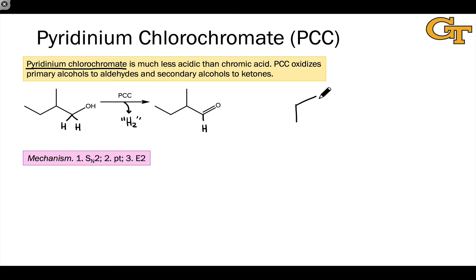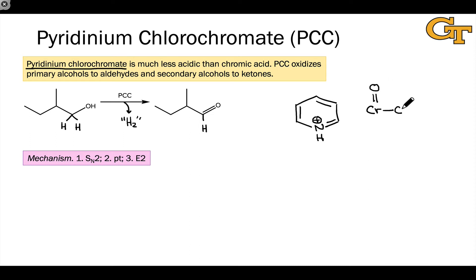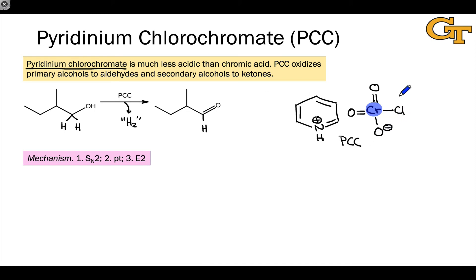The PCC reagent itself is an ionic salt consisting of the pyridinium cation — pyridine is a nitrogen-containing aromatic compound bearing a hydrogen on the basic nitrogen atom — paired with the chlorochromate anion. This has the same oxidation level as chromic acid, but a chlorine has replaced one of the hydroxyl groups and the other hydroxyl group has been deprotonated. The structure of the chlorochromate anion is the Lewis structure of PCC. Notably, the chromium is not only in a very high oxidation state but also connected to a good leaving group, making the chromium atom electrophilic — key to the reactivity of PCC.